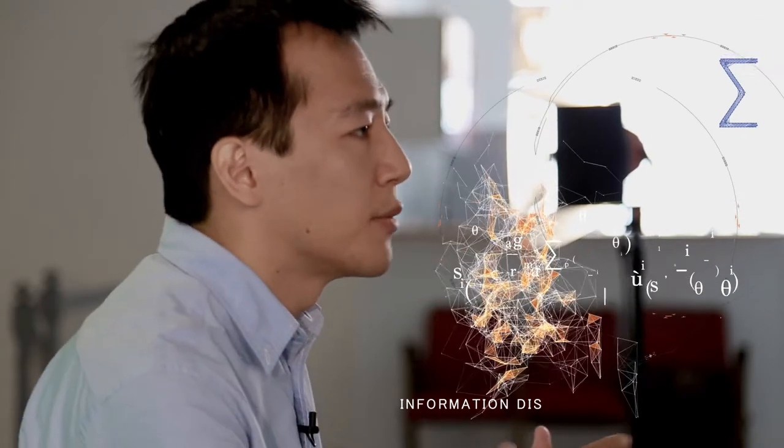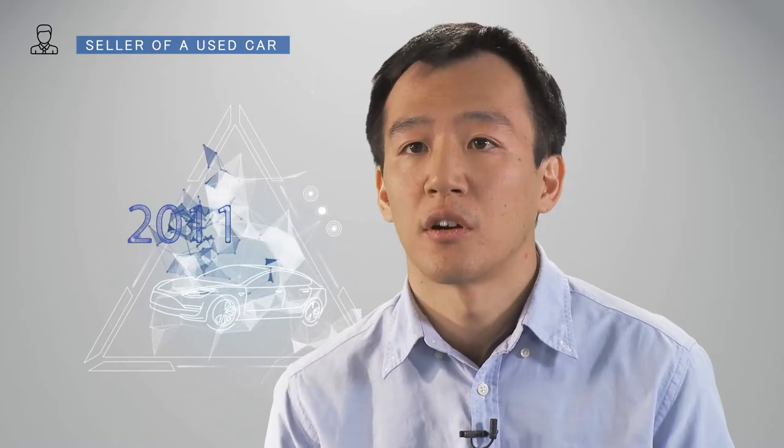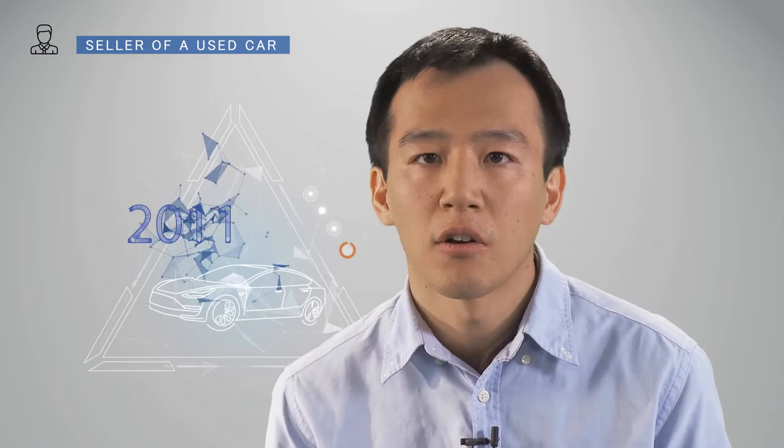One of the topics I'm working on currently is a combination of mechanism design and so-called information disclosure problem. To give some idea, imagine that you are the seller of some used car or second-hand car and you know the quality of this car.